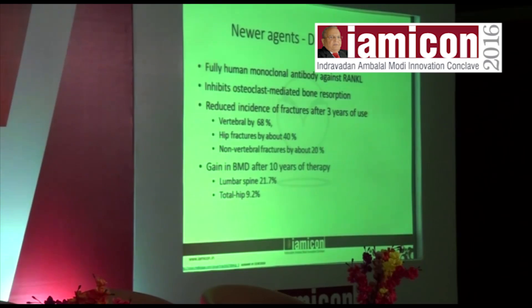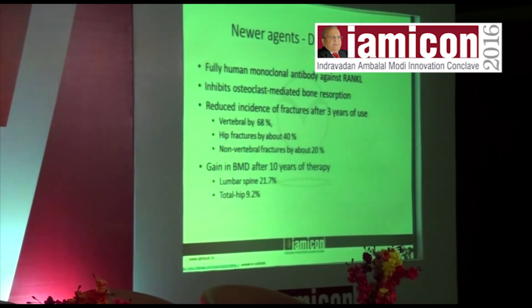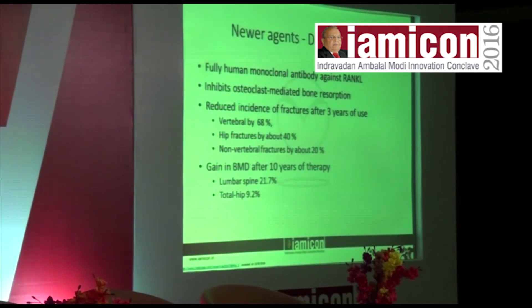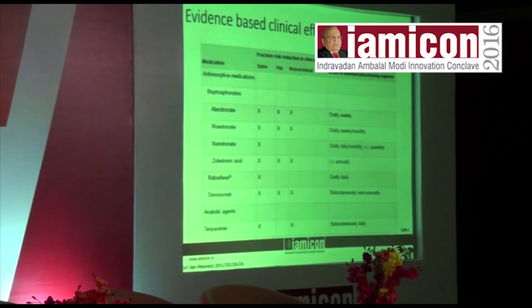Newer agents include denosumab — a fully human monoclonal antibody against RANKL that inhibits osteoclast-mediated bone resorption. It reduces the incidence of fractures after three years: vertebral fractures by 68%, hip fractures by 40%, non-vertebral fractures by about 20%. Gains in BMD after 10 years of therapy: lumbar spine 21.7%, total hip 9.2%. However, all these therapies are extremely expensive.